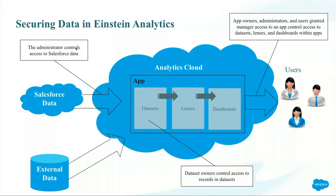This slide represents an overview of how data is secured in Einstein Analytics. It's important to note that Einstein Analytics is a separate database than your Salesforce database, and therefore it has a different method of implementing security. In Einstein Analytics, you have the ability to secure data at the record level within the data set. You also have the ability to secure your data from an app perspective, which secures all of the data in your data sets, your lenses, and your dashboards. We also have the concept of inherited security, but there are some limitations using that, which we'll get into in a few more minutes.